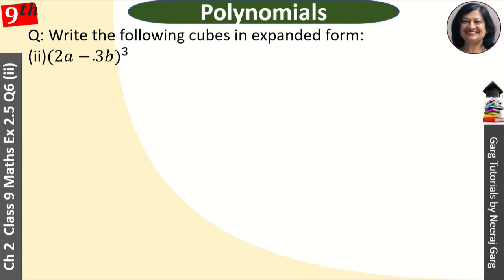Here we have the identity of a minus b whole cube. Our identity is (x - y)³ = x³ - y³ - 3xy(x - y).